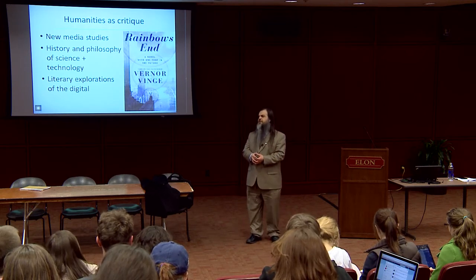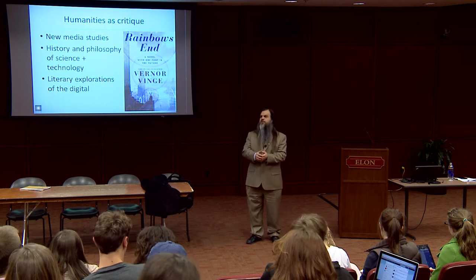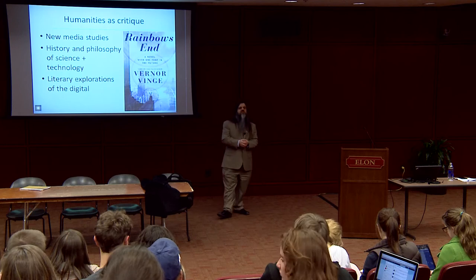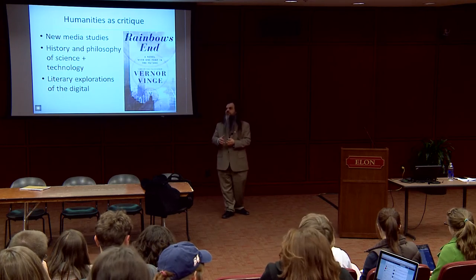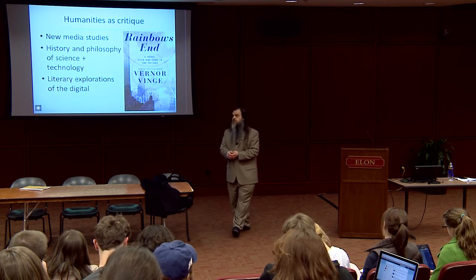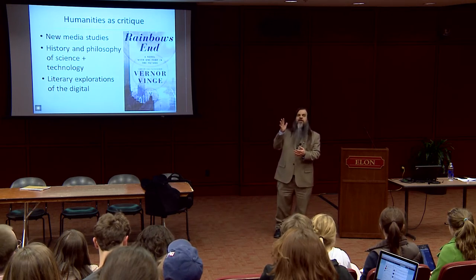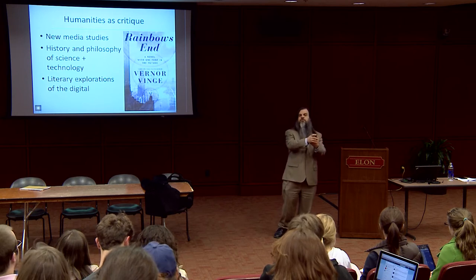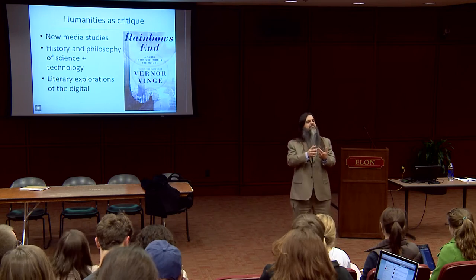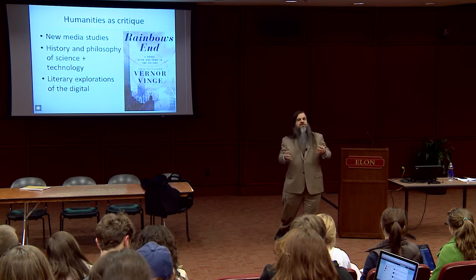There's a photo over there. Has anyone here read Rainbow's End? Faculty and administrators should really take time for this book. It's a science fiction novel taking place about 15 years from now, in a high school and a college — its main purpose is to figure out what those institutions would look like in that future. The main character has Alzheimer's, and they figure out how to reverse it. He was a great poet and also kind of a son of a bitch. It's a fascinating book to anticipate some issues.